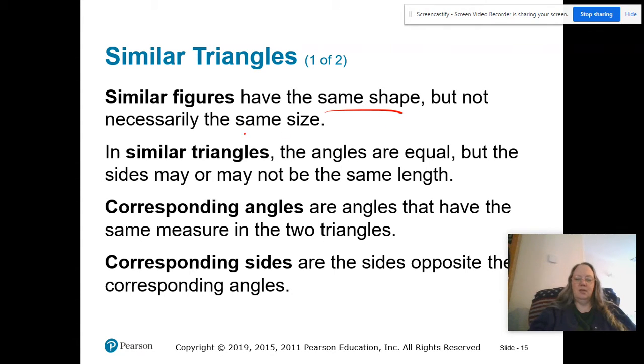Same shape, not necessarily the same size. The angles are equal. That's important. But the sides may or may not be the same length. Corresponding angles are the angles that have the same measure in two different triangles. And corresponding sides are the sides opposite the corresponding angles.